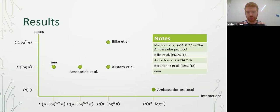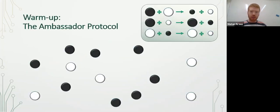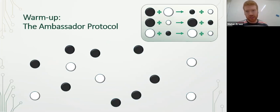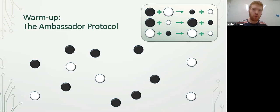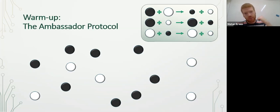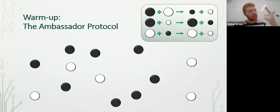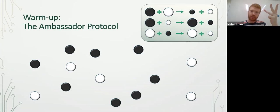As a warm-up, let's start with the ambassador protocol. In the ambassador protocol, there are four possible states — only O(1) states per node. It can be either big and black, small and black, big and white, or small and white.